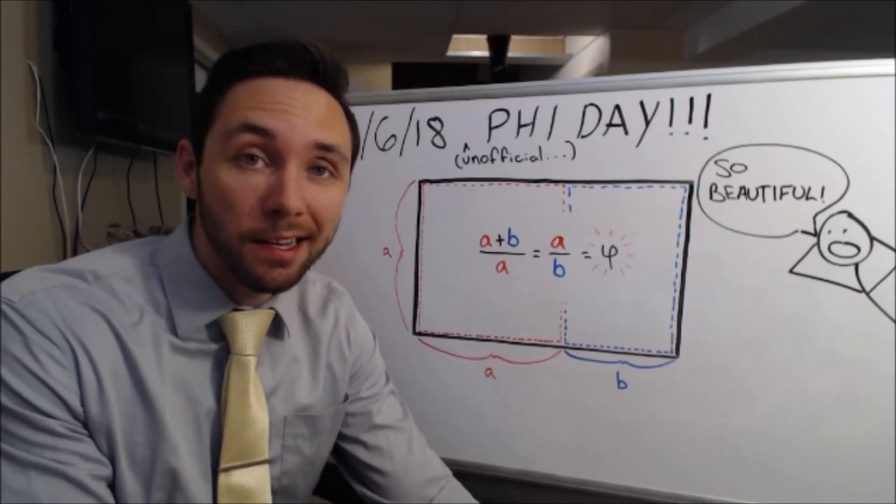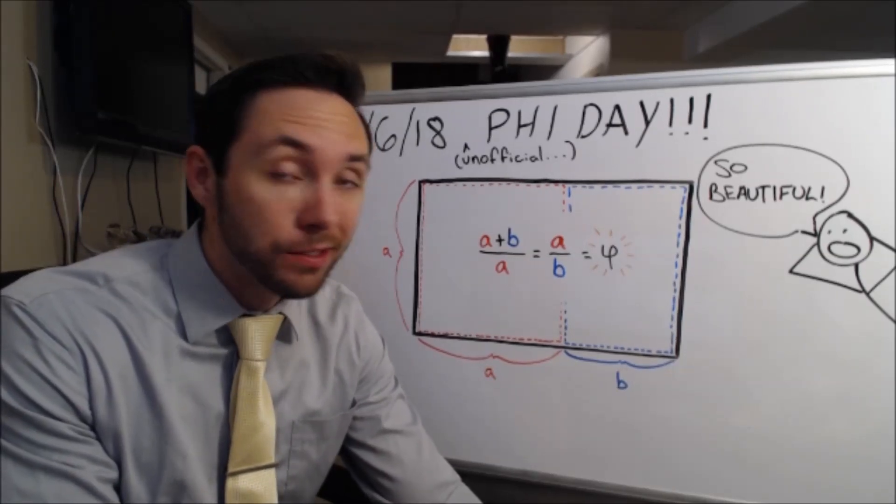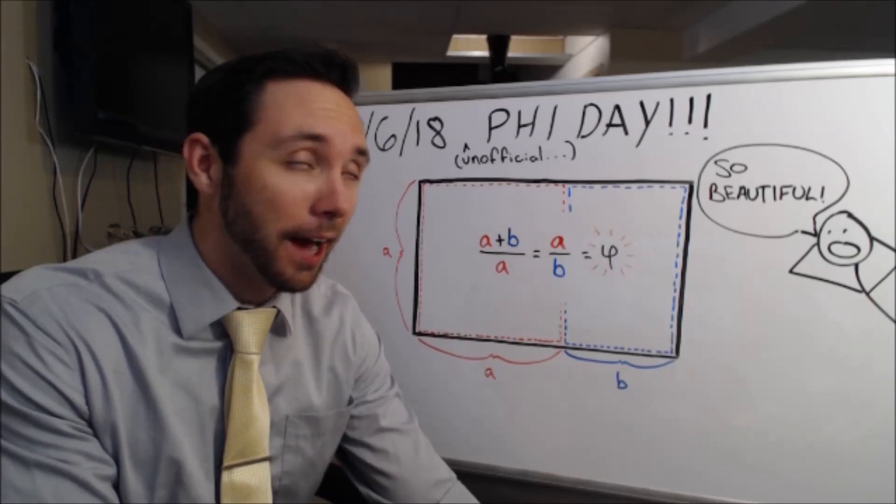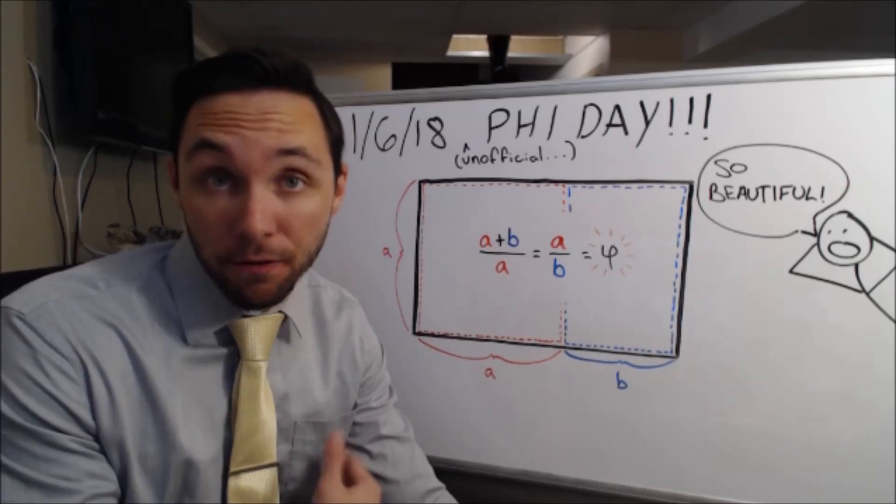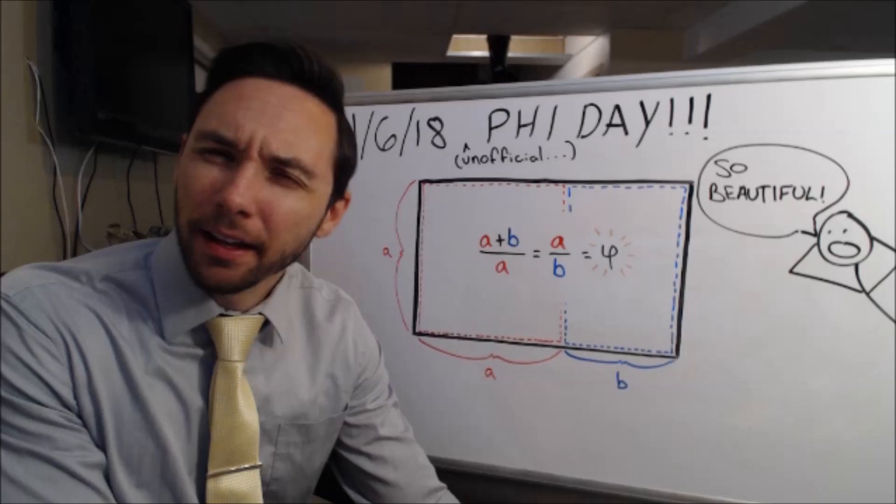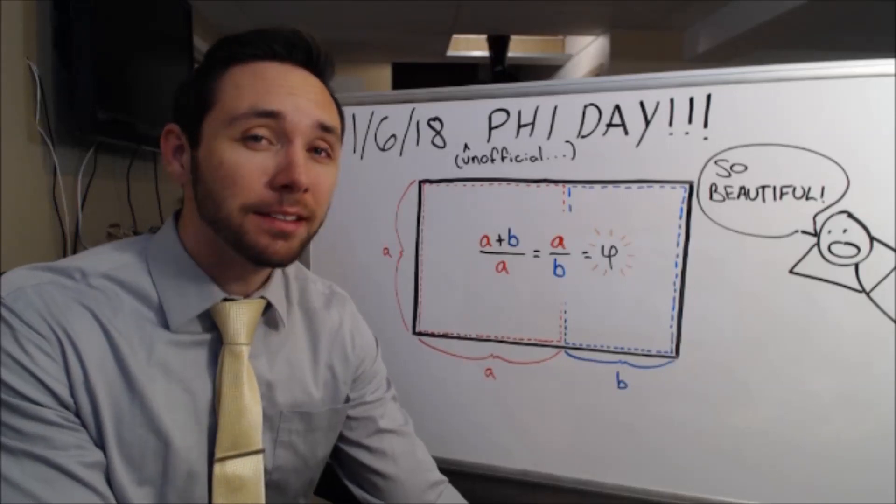Today is 1-6-1-8, otherwise known as unofficial, because nobody really officially views today as this day, but I do. I think it's really cool. Phi, Phi Day, not Friday, but Phi Day, the Greek letter Phi, the golden ratio.